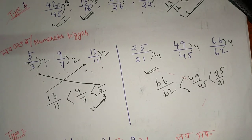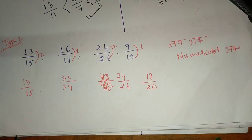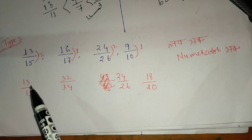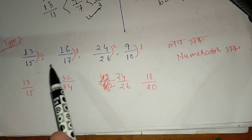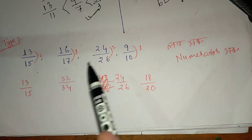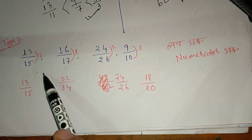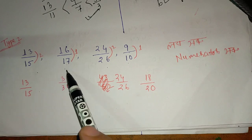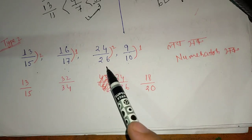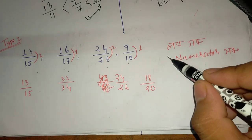We are going to take a clear idea. If the difference is the same, we have no difference to distinguish. Next question is: 13 by 15, 16 by 17, 24 by 26, and 9 by 10. 13 by 15, 16 by 17, 24 by 26, 9 by 10.